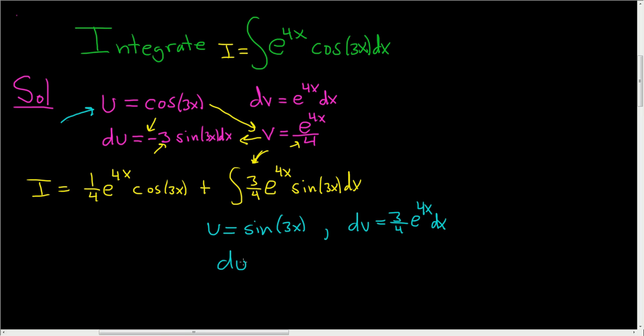So du, let's see, the derivative of sine is cosine, but we have to use the chain rule. So the derivative of 3x is 3. So I'm going to put the 3 out front to keep it clean, and this is the cosine of 3x dx. And then v, again we divide by 4 here, and so 4 times 4 is 16. So we get 3 over 16 e to the 4x.